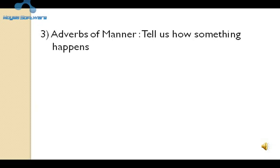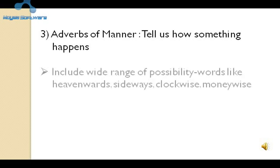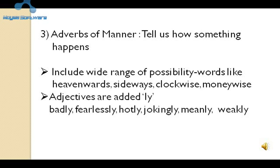घटनाएं कब हुई, कहाँ पर हुई — इनके साथ-साथ घटनाएं कैसे हुई, ये बताने के लिए भी शब्द आते हैं, जिन्हें हम adverbs of manner कहते हैं। इसमें बहुत सारे शब्दों की range include होती है — heavenwards, sideways, clockwise, moneywise इन प्रकार के शब्दों का भी प्रयोग होता है। पर ये range इसलिए wide है क्योंकि यहाँ पर -ly, double -ly, -ily suffixes लगकर भी बहुत सारे adverbs बनते हैं।